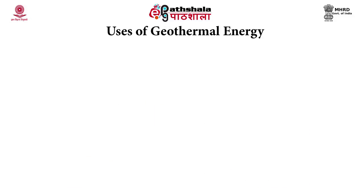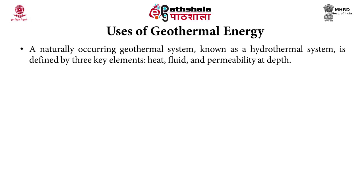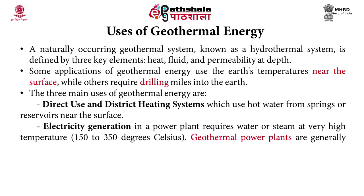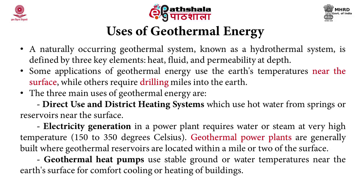A naturally occurring geothermal system, known as a hydrothermal system, is defined by three key elements: heat, fluid, and permeability at depth. Some applications of geothermal energy use the earth's temperatures near the surface, while others require drilling miles into the earth. The three main uses of geothermal energy are: direct use for heating systems, which use hot water from springs or reservoirs near the surface; electricity generation in a power plant, which requires water or steam at very high temperature; and geothermal heat pumps, which use stable ground or water temperatures near the earth's surface for comfort cooling or heating of buildings.